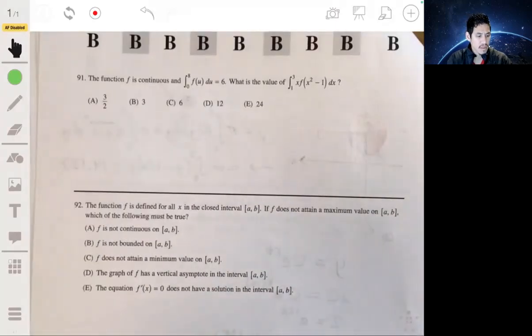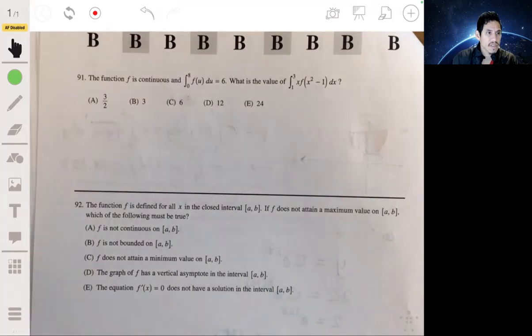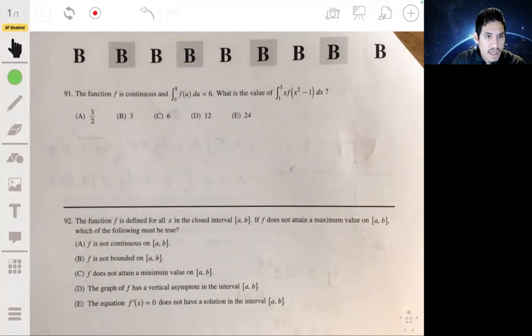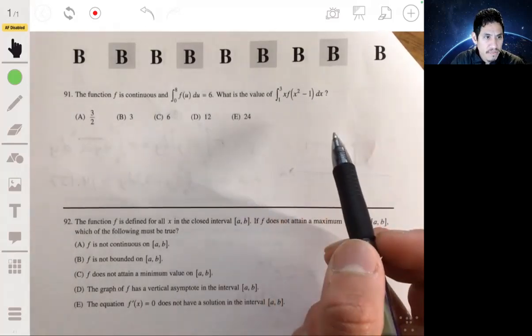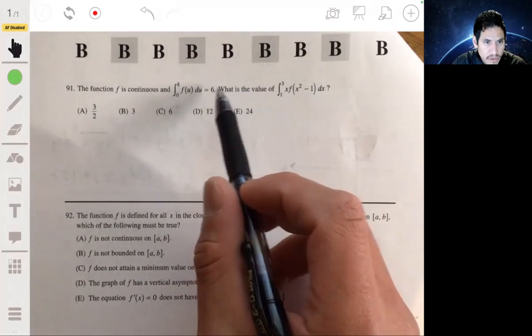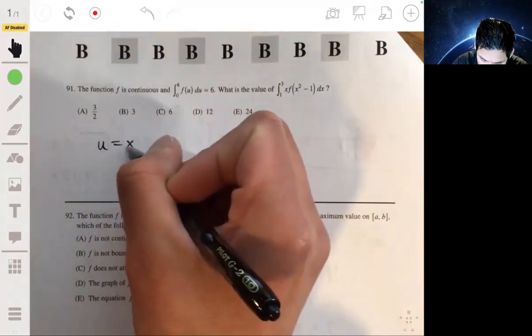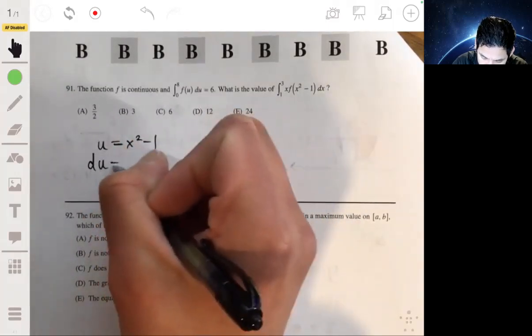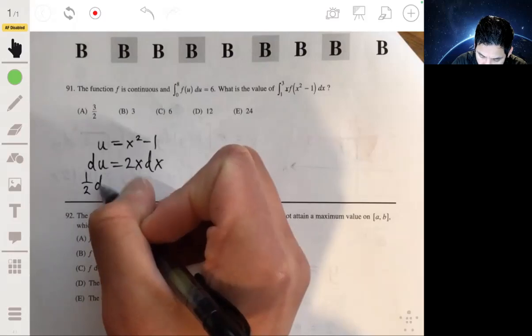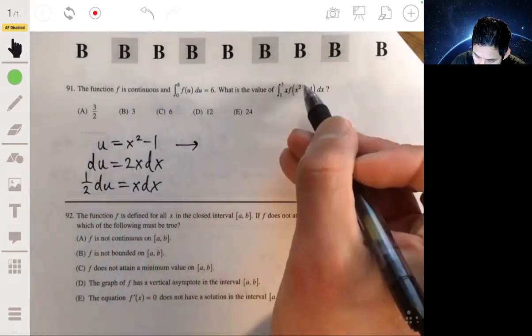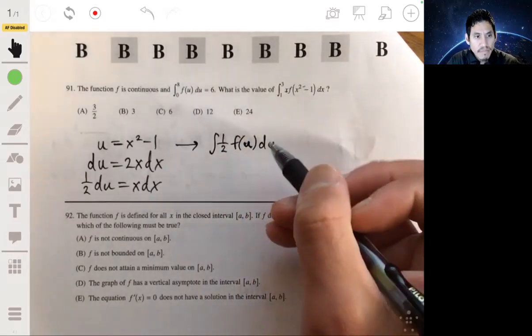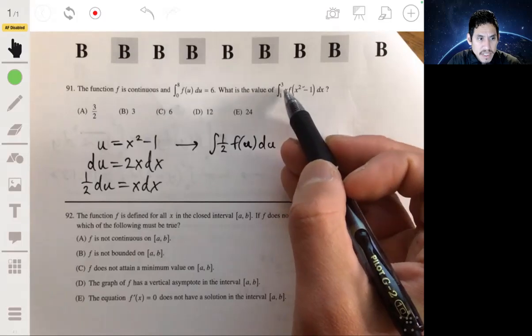All right, just two more. We got that function f is continuous on 0 to 8 and the integral from 0 to 8 of f of u du equals 6. So what's the value of this integral from 1 to 3 of x times f of x squared minus 1 dx? Okay, this is meant to get you, but you've just got to use your substitution. We're going to make u equal to x squared minus 1. If u is equal to x squared minus 1, then du is equal to 2x dx. We got here an x dx, so we want to have 1 half du equal to x dx. And then this integral just becomes 1 half the integral of f of u du.